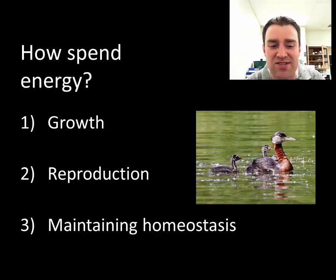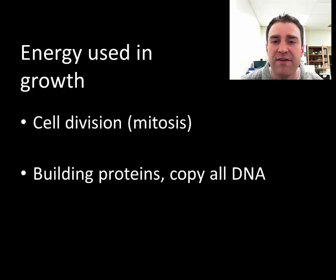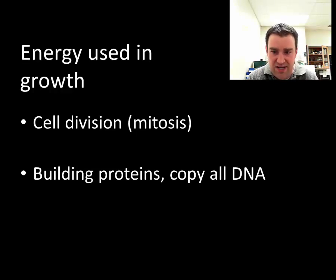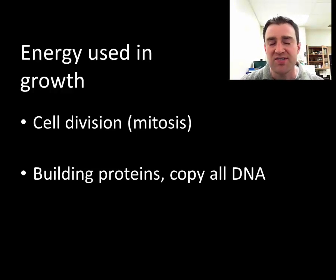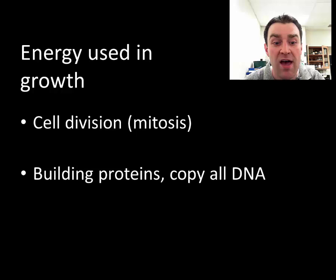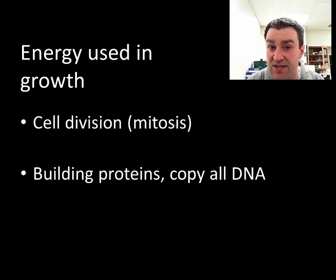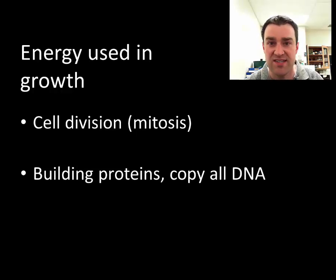All organisms spend energy doing three basic things: growth, reproduction, and maintaining homeostasis. Regarding growth — even a single-celled bacterium produced by cell division results in two smaller cells that need to expand. Most multicellular organisms grow by making more cells through a process called mitosis. Growth involves building proteins, which is very energy expensive, and copying all DNA to make a new cell is also quite energy intensive.